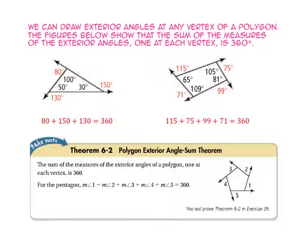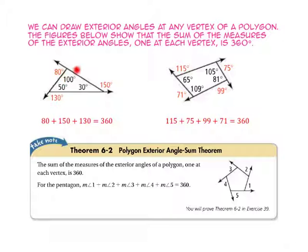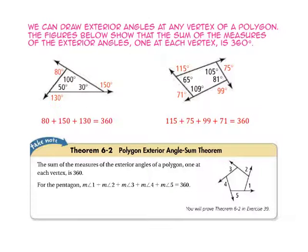We can draw exterior angles at any vertex of a polygon. The figures show that the sum of the measures of the exterior angles, one at each vertex, is 360 degrees. For example, a 30-degree interior angle has a supplementary exterior angle of 150 degrees; a 100-degree angle has an exterior angle of 80 degrees; and a 50-degree angle has an exterior angle of 130 degrees. And 80 plus 150 plus 130 equals 360.